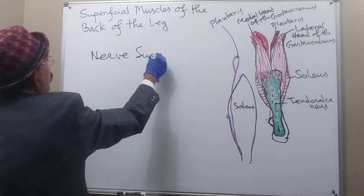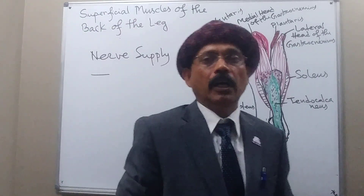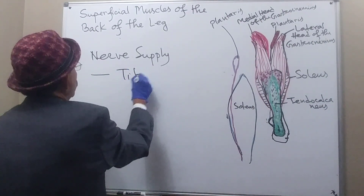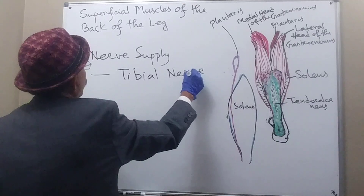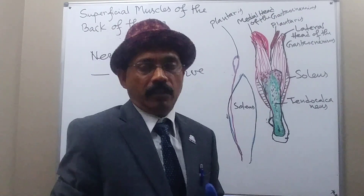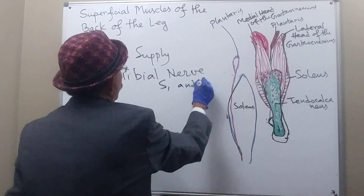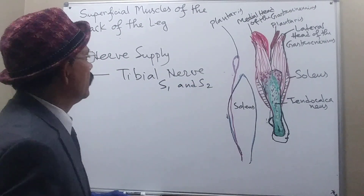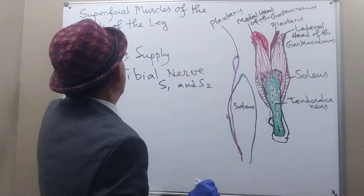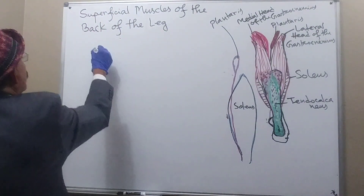Nerve supply is easy to remember — all the muscles at the back of the leg are innervated by the tibial nerve, with a root value of S1 and S2. This applies to the gastrocnemius and also to the soleus muscle. Now we move on to the soleus.